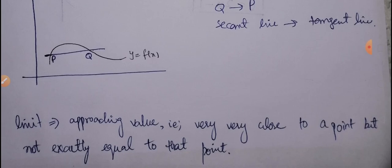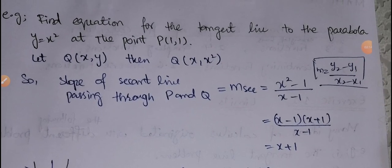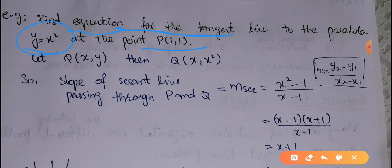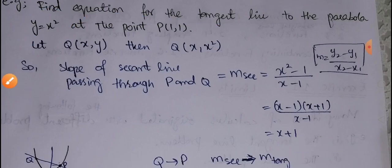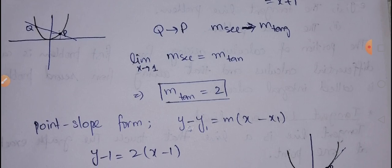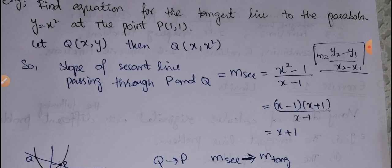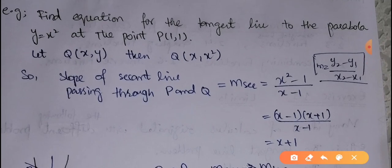For example, we have to find the equation of the tangent line to the parabola y = x² at the point P(1, 1). We need to find the slope of the tangent line. To find the equation of a line we use the point-slope form: y − y₁ = m(x − x₁), which requires knowing the slope m. Since we can only identify one point on the tangent line from the curve, we first find the slope of the secant line using the formula: slope = (y₂ − y₁)/(x₂ − x₁).